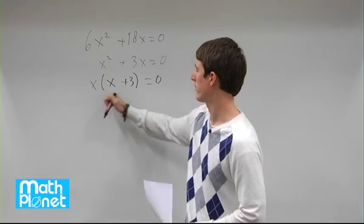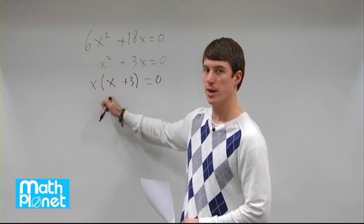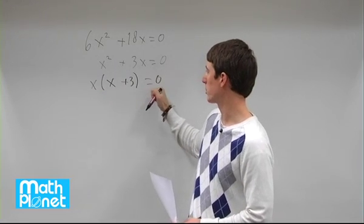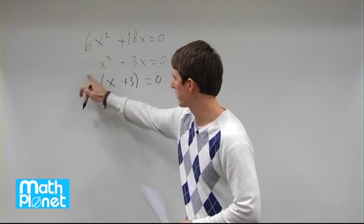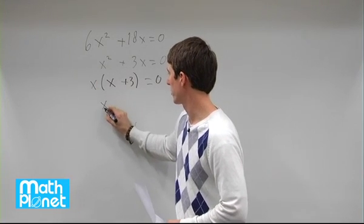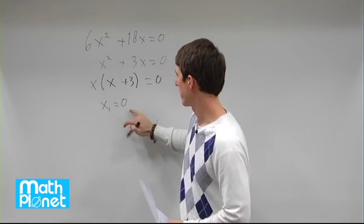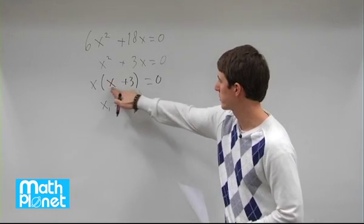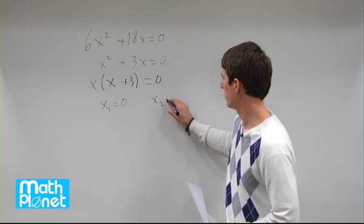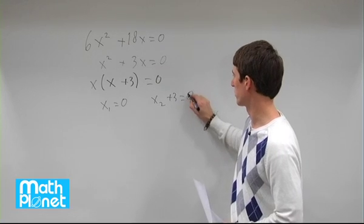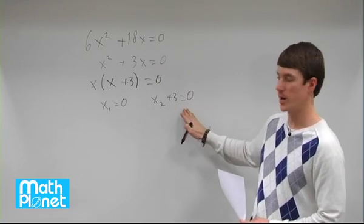We have two factors here, two quantities. Each of them separately can be equal to 0. So if we have this one set equal to 0, we'll call it x1. That's one answer. This term as well, we'll call x2, plus 3 can also be equal to 0. So this will give us a different answer for x.